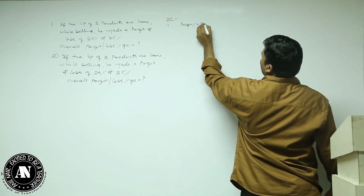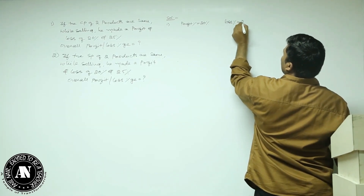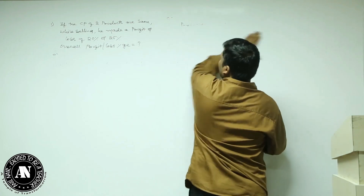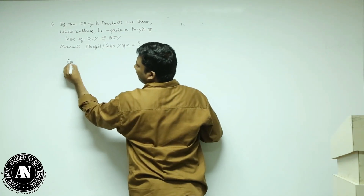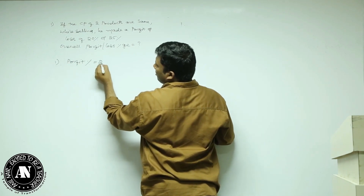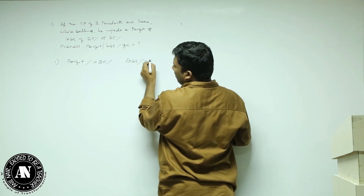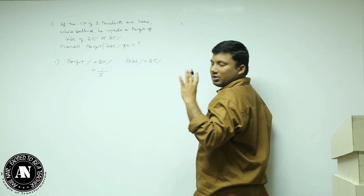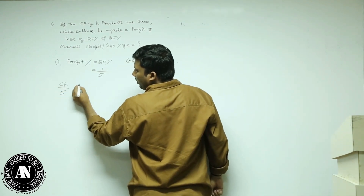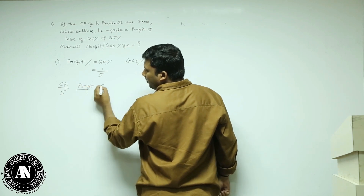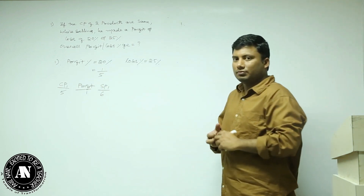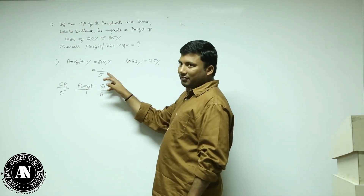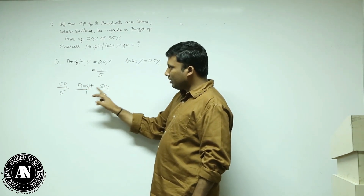Profit percentage in the first transaction is 20%. Loss percentage in the second transaction is 25%. You don't require any notation. Profit is 20%, which is 1 by 5. Profit is always calculated on cost price. So if cost price is 5, there is a profit of 1, meaning selling price will become 6.